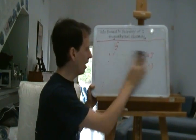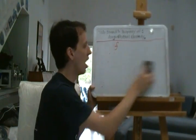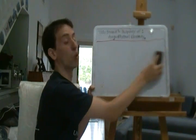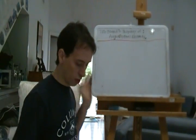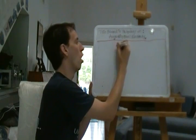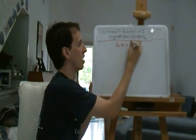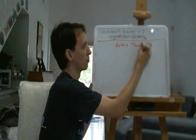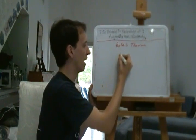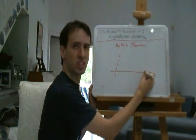And doesn't it make sense that way? Doesn't that kind of make sense? I mean, let's look at it. That's Rolle's Theorem, by the way. Spelled with an e. R-O-L-L-E's Theorem. Okay, let's look at it. It's pretty easy to understand this.